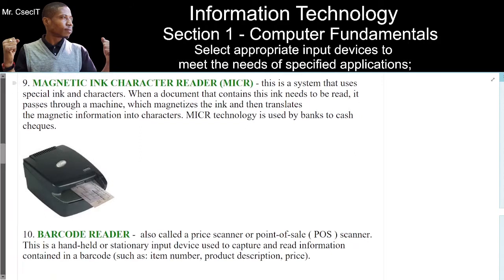Number 9. Magnetic Ink Character Reader, MICR. This is a system that uses special ink and characters. When a document that contains this ink needs to be read, it passes through a machine which magnetizes the ink and then translates the magnetic information into characters. MICR technology is used by banks to cash checks.